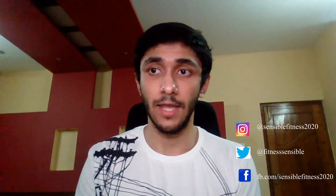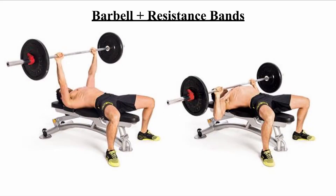A great way to overcome this challenge is to understand strength curves and resistance curves. For example, you could add a resistance band for the bench press. At the bottom of the movement, the resistance band is not stretched and not tight, so it won't actually add any more weight to the bar. You could put 150 pounds on the bar and add a resistance band, giving you a total resistance of 150 pounds at the bottom.